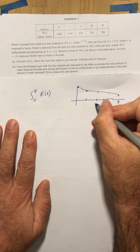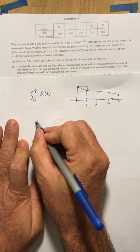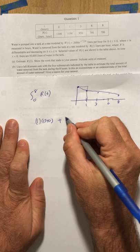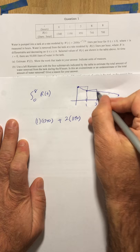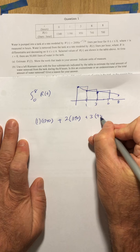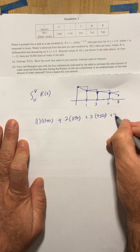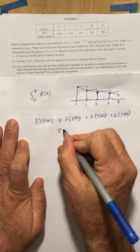So my first left rectangle has a width of 1 and a height of 1340. My next one has a width of 2 and a height of 1190. My next one has a height of 950 and a width of 3. And my last one has a width of 2 and a height of 740. Using your calculator, putting all this together, you get 8050 as your answer.